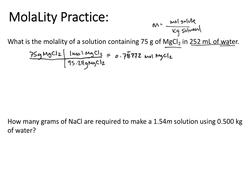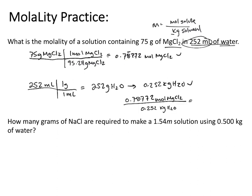Then we have 252 milliliters of water, which we need to convert to kilograms. Using the density of water, one gram per milliliter, that's 252 grams of H2O, or 0.252 kilograms. Putting these together and performing our calculation gives 3.125, which to two significant figures is 3.1 molal MgCl2.